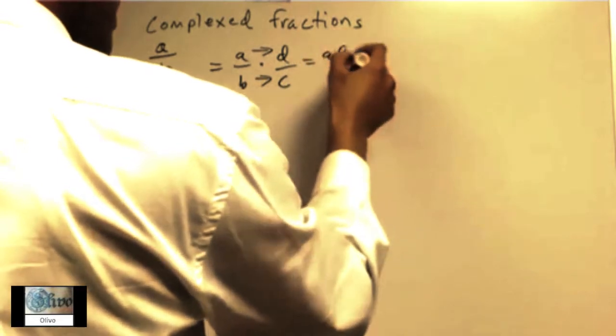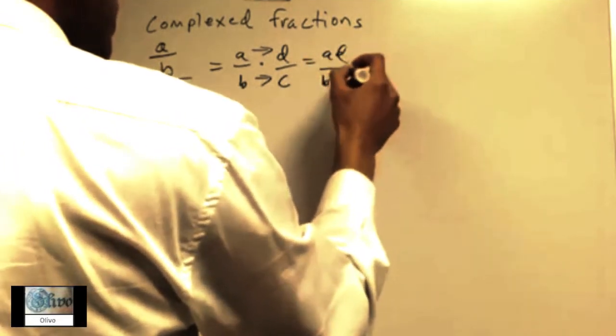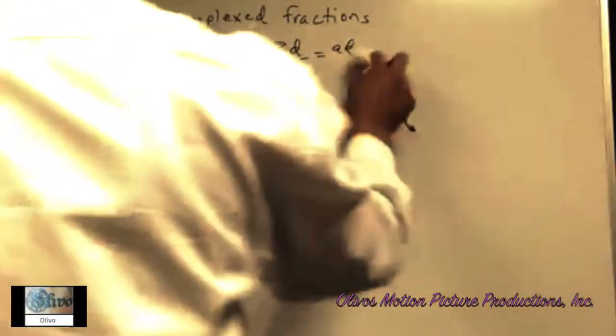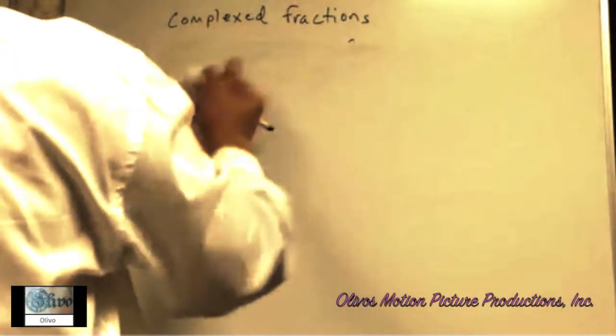And that'll give you AD over BC. Okay, so that's one way to do it.